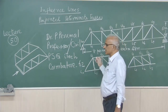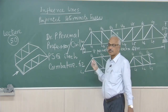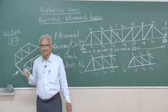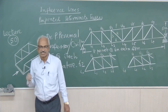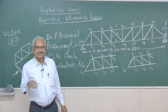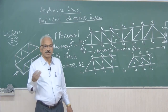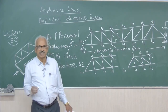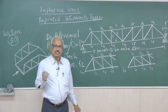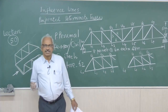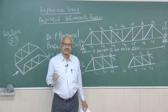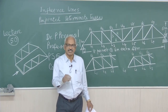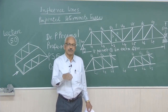We will now take up the influence line for pin jointed trusses. In the case of bridges, trusses normally come in pairs — one on the right hand side and one on the left hand side of the bridge. The trusses are subjected to moving loads.